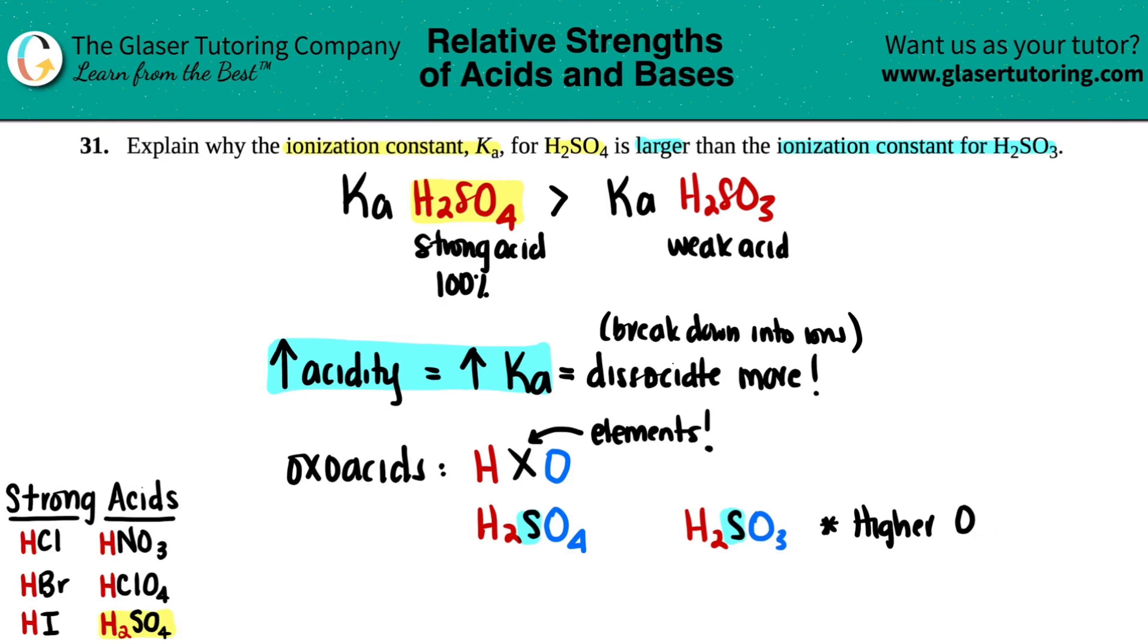So higher the oxygen, and maybe I'll put that as just a note. The higher the oxygen, increase acidity. That's only a rule for oxoacids, and you have the same element. So the higher number of oxygens you have, the higher acidity you are, which also will increase that Ka value.